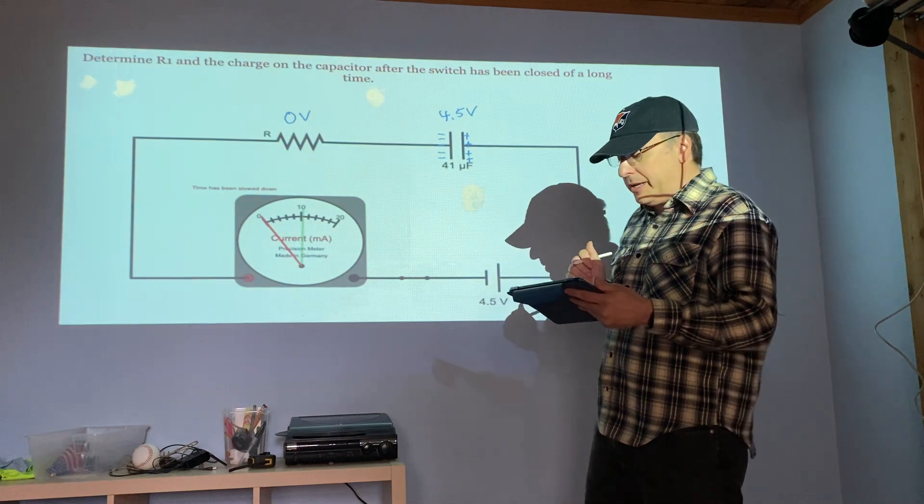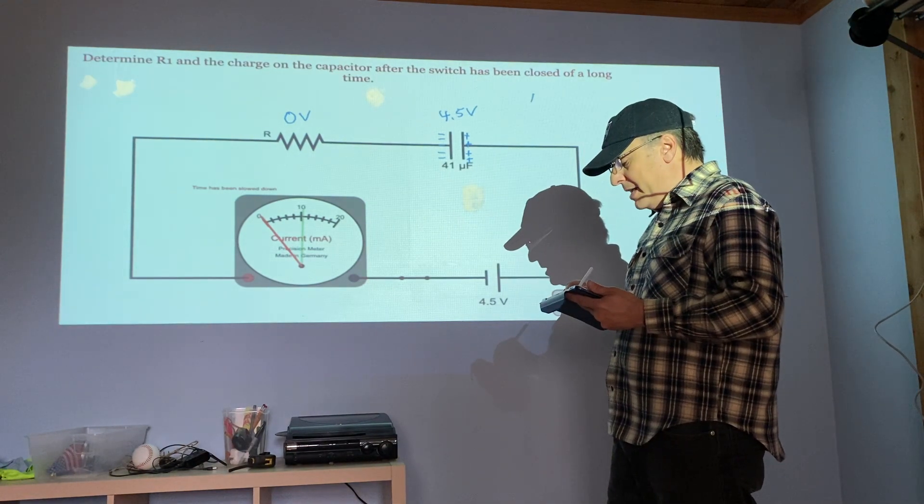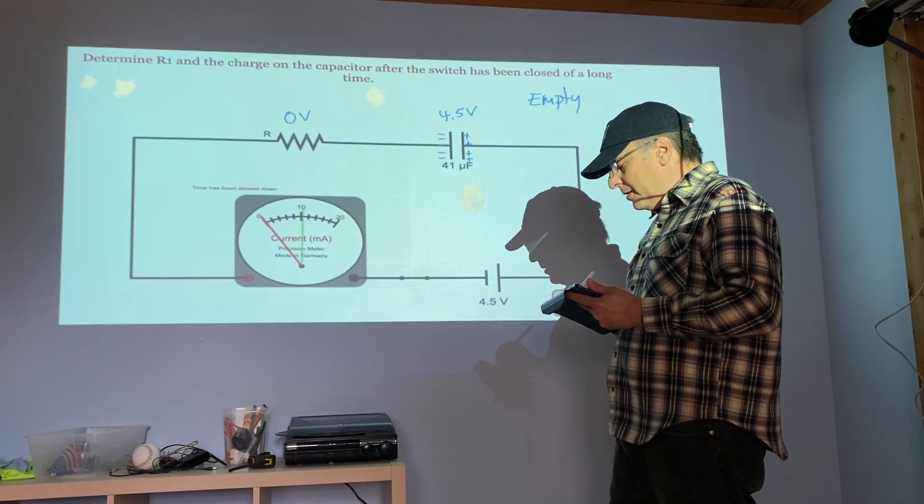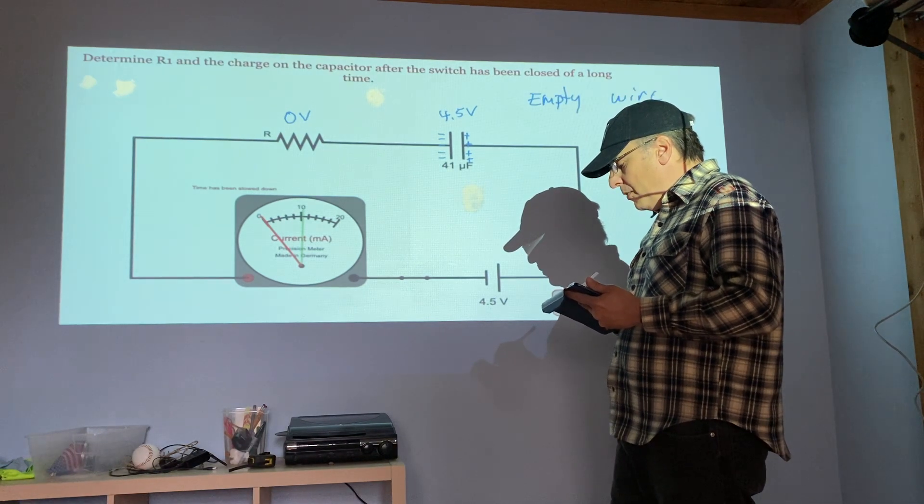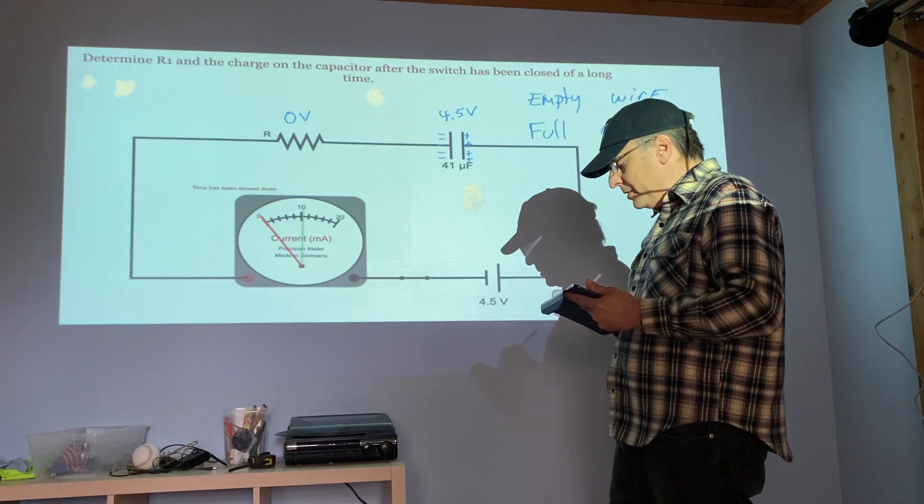It stops electricity from flowing through this part of our circuit. So the summary: when the capacitor is empty it acts like a wire, and when the capacitor is full it acts like an open switch.